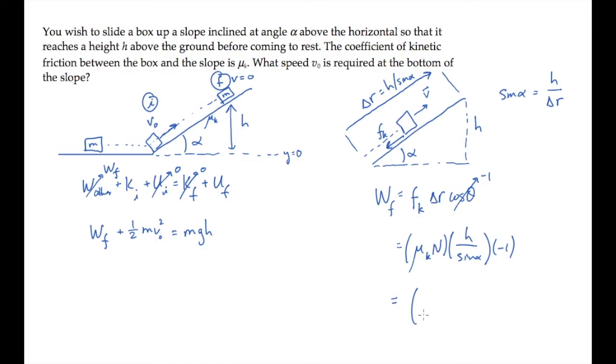Now we remember that for a block on an inclined plane, the normal force is mg times cosine of the angle, alpha in this case. If you've forgotten that, there's a quick tip, block on an inclined plane, showing that result, or you can quickly find it by summing forces.